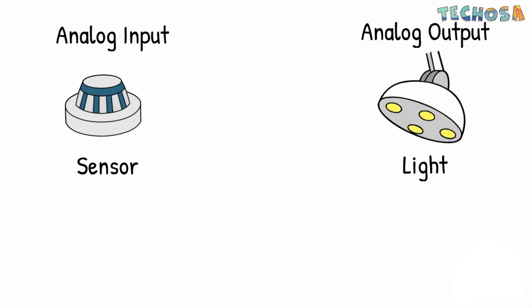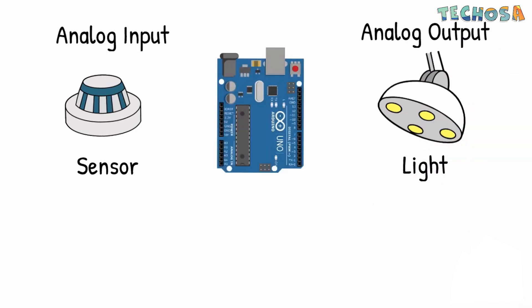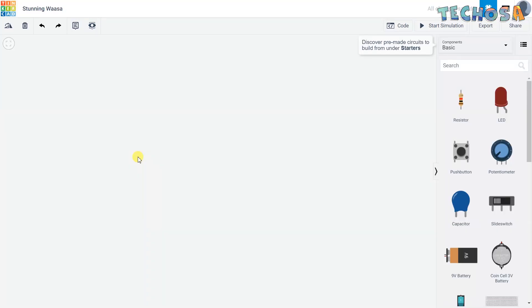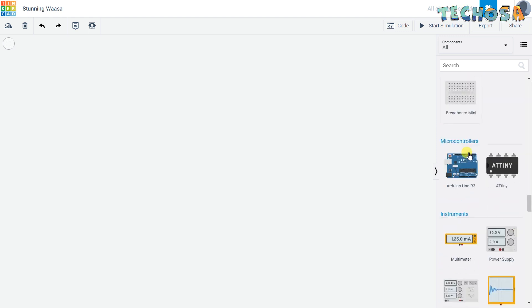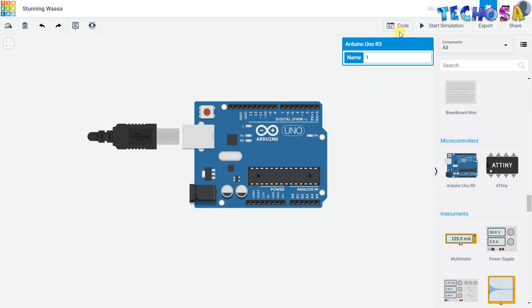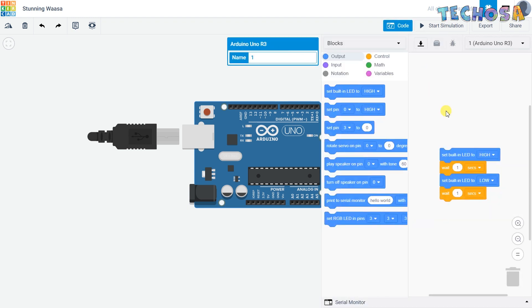Consider an embedded system example using a light sensor: the light should be on at night and off during the day. We have an analog input from the light sensor and an analog output in the form of a light. The sensor's analog output value is fed to the controller, which decides when the light should be on or off. In the next videos we will look at how different sensors can be connected to Arduino and how to code them.